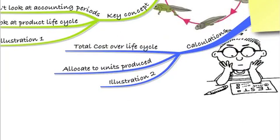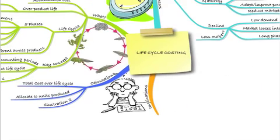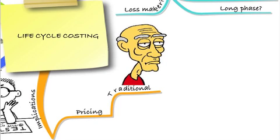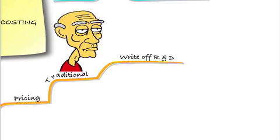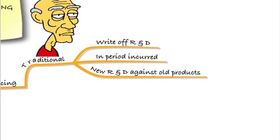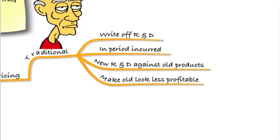Now that we've looked at the calculations for life cycle costing, we need to be able to discuss their implications for pricing. Under traditional methods of costing, we often write off research and development costs in the period in which they're incurred. This means we're writing off R&D costs on new products against the revenue being generated by old products already in their growth phase — making those old products look less profitable, because we're writing the new R&D cost off against their revenue.